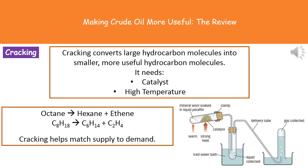Here's an example of an equation you could see. If we start with octane, which is a large hydrocarbon, and heat it up in the presence of a catalyst, we end up with hexane and ethene. The symbol equation underneath shows how that splits. Remember, the whole purpose of cracking is to help match the supply to our demands.